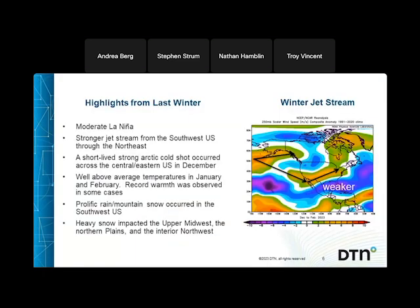Looking at last winter's jet stream, the enhanced jet stream winds ran from the southwestern part of the country to the northeast, showing where the storm track generally was. That was primarily caused by a moderate La Niña, which created the stronger jet stream. We had a short-lived Arctic air mass across the central and eastern U.S. in December, right before Christmas. We then followed it with well above average temperatures in January and February — some of record variety — along with heavy rain and mountain snow across the southwest and heavy snow across the upper Midwest and northern plains.